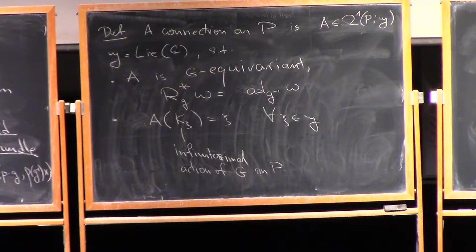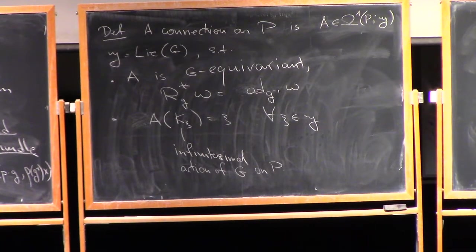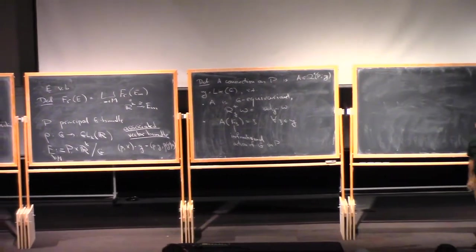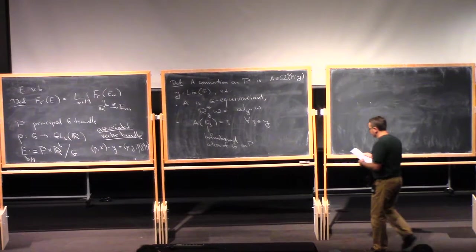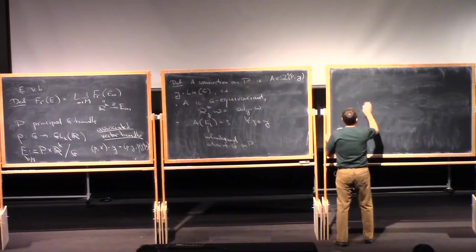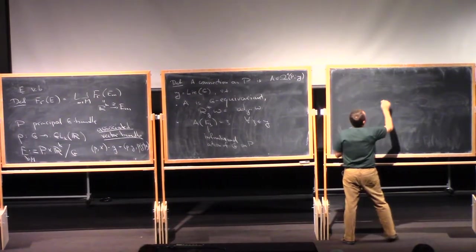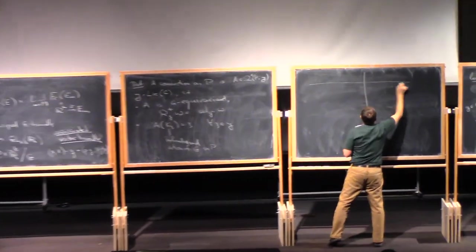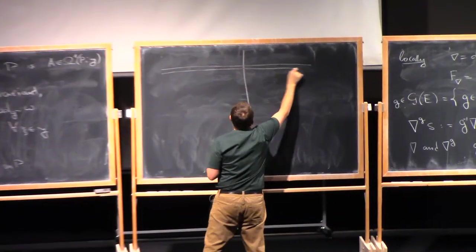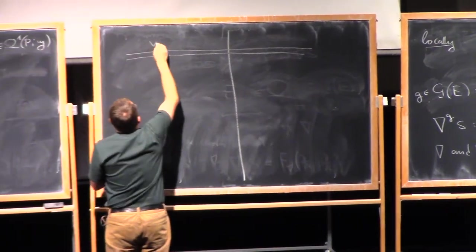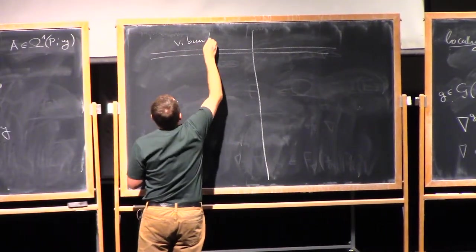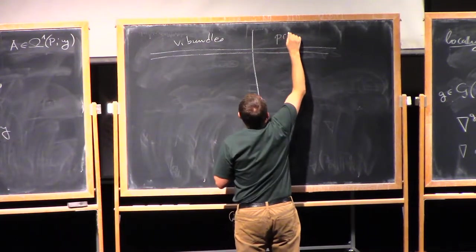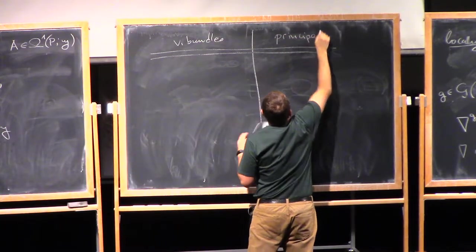Let us make connections between connections. So these two notions obviously are very closely related, as the name suggests. In fact, we can even provide a dictionary. On the one hand, we have vector bundles. On the other hand, we have principal bundles.